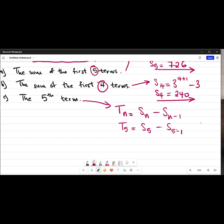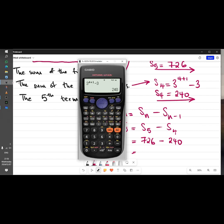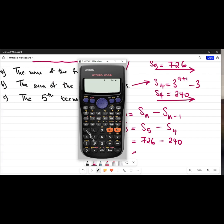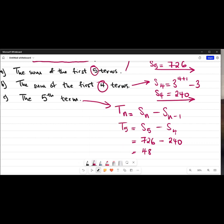5 minus 1, which would be 4. And if you notice, we calculated those at the top. S_5 would be 726 minus S_4 which is 240. Meaning the fifth term now would be the difference between the two numbers. So I just say 726 - 240, and that gives me 486. There you go, this is the fifth term.